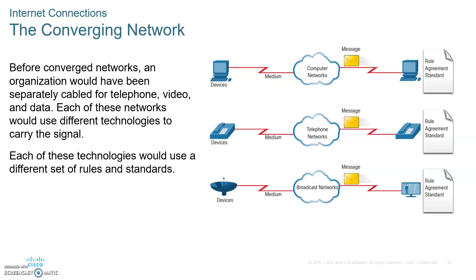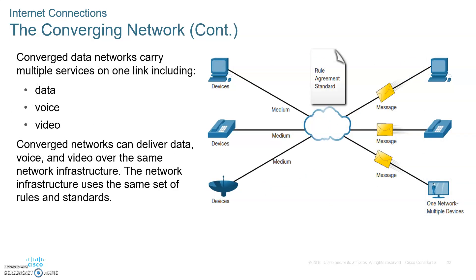Converging networks: in the old days there was a separate service for every type of connection — telephone company for voice, a different provider for data, another for video. When we put all these connections together, that is converging. We take data, voice, and video connecting on the same network. They are all packaged the same way, with different labels indicating the type of data inside, so they all travel together on the same wire. A converged network delivers data, voice, and video over the same network infrastructure — please write that down.